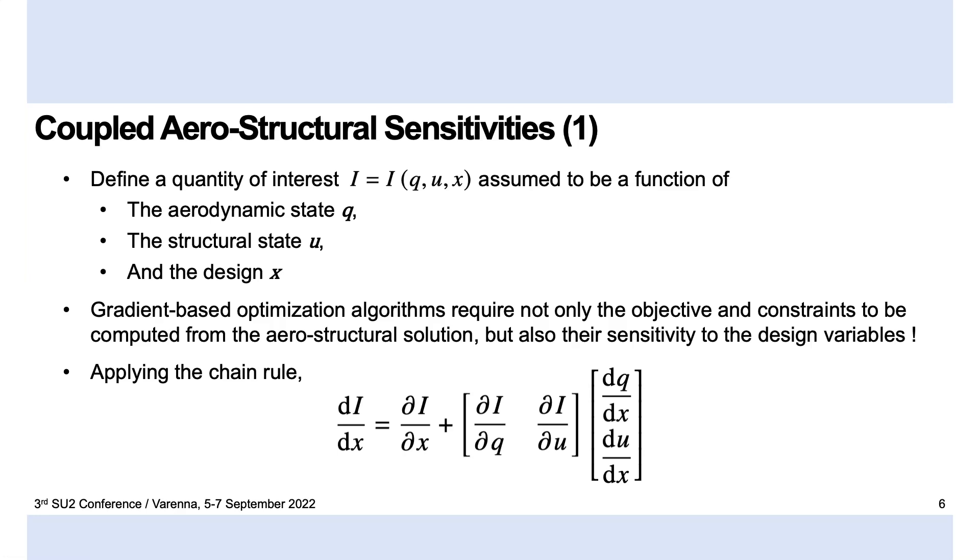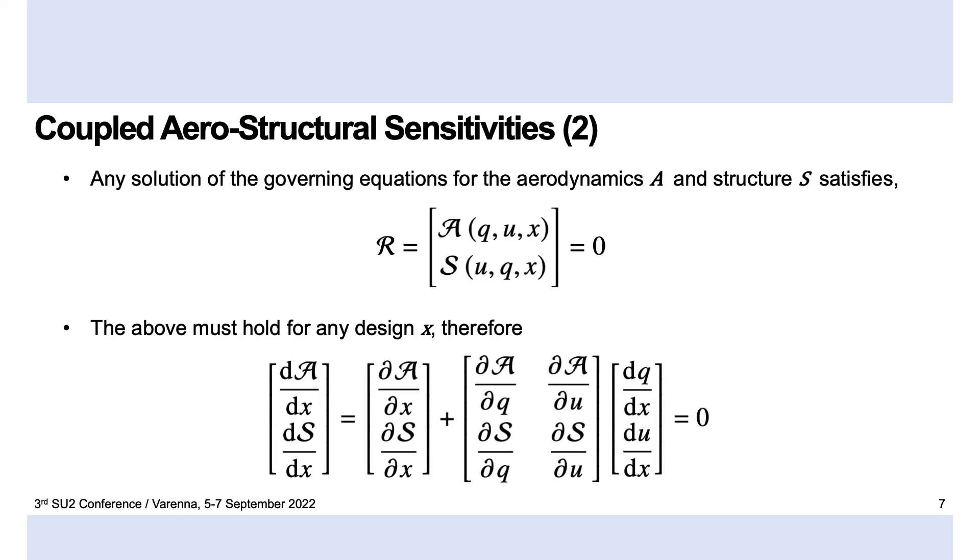So, I'll be very brief about the theory. Returning to the optimization problem, let's assume we have our quantity of interest, which could be a constraint, but more commonly is some aerodynamic quantity related to air performance, which depends on both the aerodynamic and structural state, as well as on the design itself.